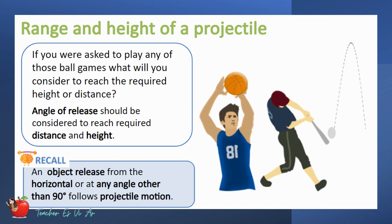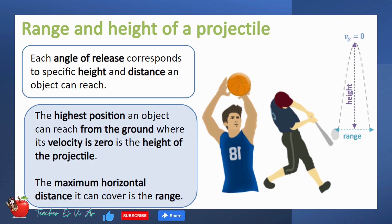One thing we can consider is the angle of release. As you can recall, an object released from a horizontal or any angle other than 90 degrees follows a projectile motion. Each angle of release corresponds to specific height and distance an object can reach. The highest position an object can reach from the ground where its velocity is zero is the height of the projectile. On the other hand, the maximum horizontal distance it can cover is the range.